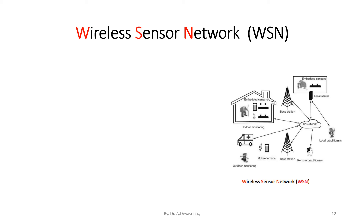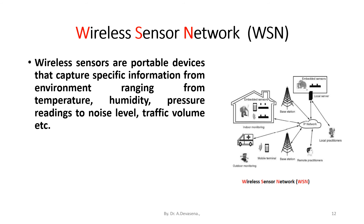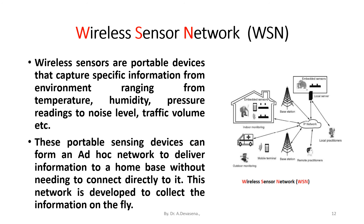Wireless sensor network: Wireless sensors are portable devices that capture specific information from the environment, ranging from temperature, humidity, and pressure readings to noise level, traffic volume, etc. These portable sensing devices can form an ad hoc network to deliver information to a home base without needing to connect directly to it. This network is developed to collect information on the fly.